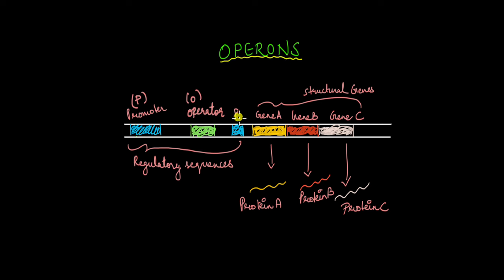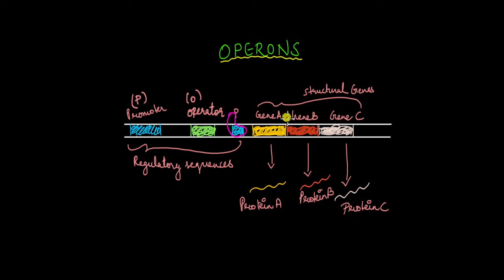Now what is an operon? An operon is a sequence of DNA. It contains a promoter, which is part of a regulatory sequence, and the promoter is involved in transcribing specific genes. These genes make up the structural genes of the operon. For example, in this sequence of DNA, you have a promoter P that controls the expression of genes A, B, and C — these are the structural genes. The promoter is where RNA polymerase comes and binds to initiate transcription, and when transcription is initiated, all three genes are synthesized at the same time and the proteins produced are involved in the same function.